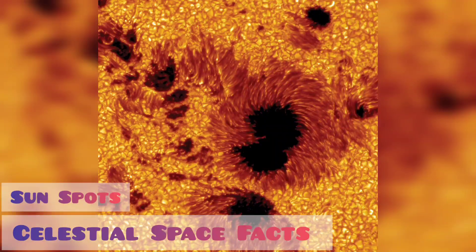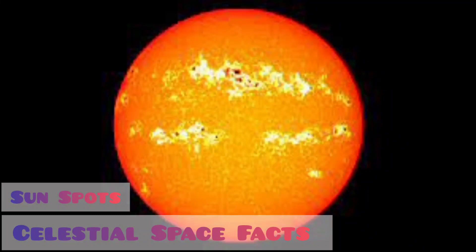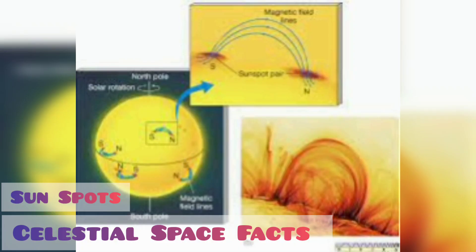They have a lighter outer section which is known as the penumbra. The middle section is darker, which is known as the umbra.